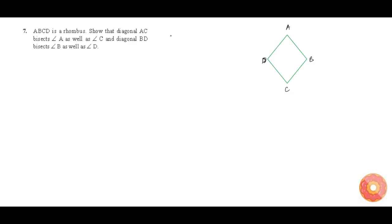Let us see what is given in the question. In this question, it is given that ABCD is a rhombus, and we need to show that diagonal AC and diagonal BD bisect angles A, B, C, and D. I am just going to show that diagonal AC bisects angle A.